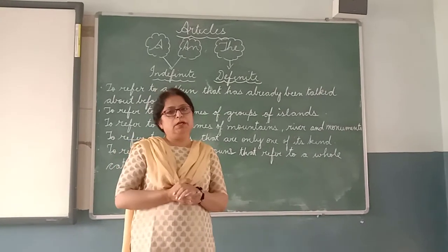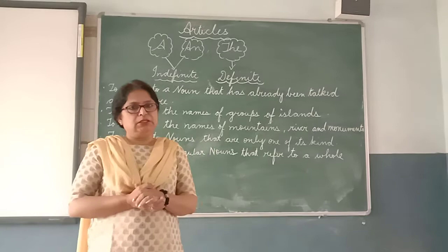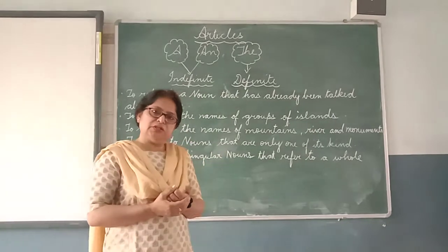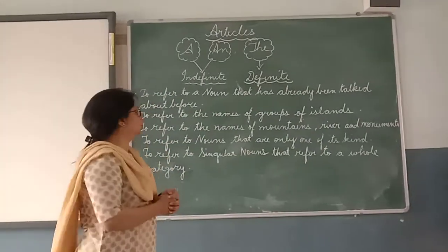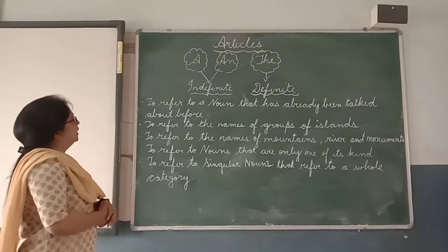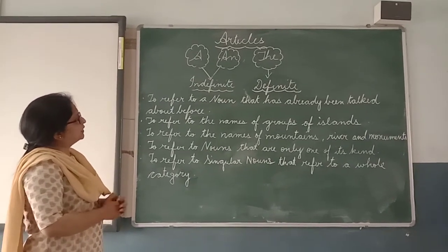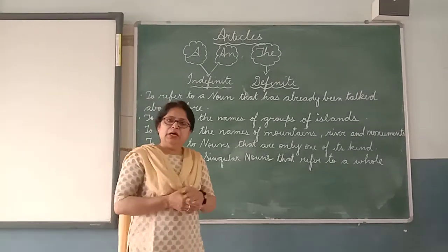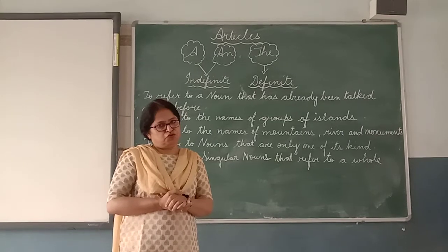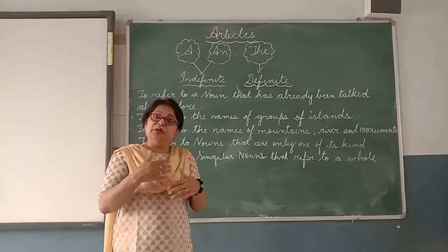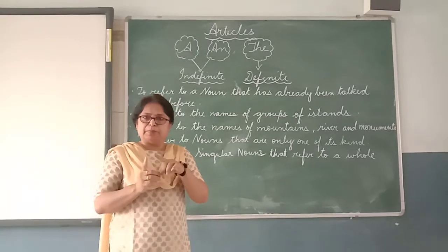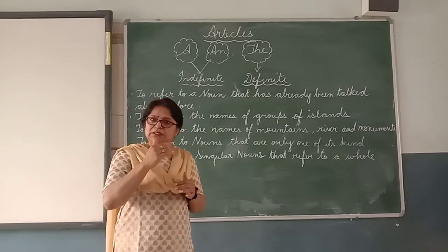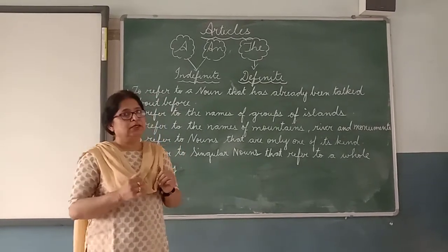Now children, we are going to learn about the article 'The', the definite article — how it is used and where it is used. The first use: it is used to refer to a noun that has already been talked about before. For example, 'A bird is sitting on the tree' — and the next time, 'The bird is green in colour.' So I'm talking about the bird which was already mentioned.